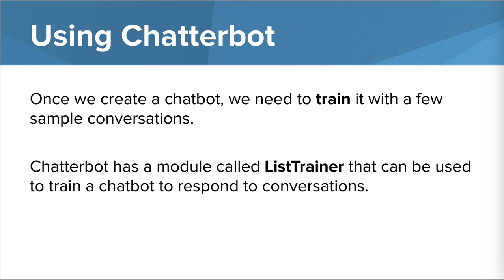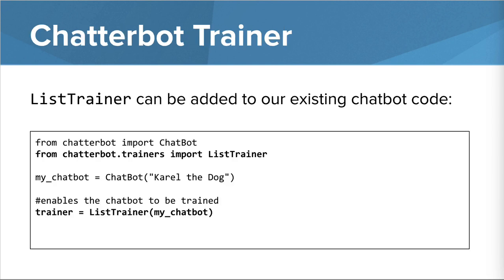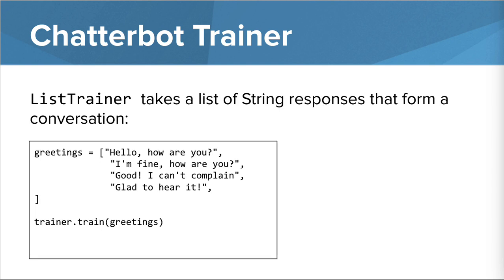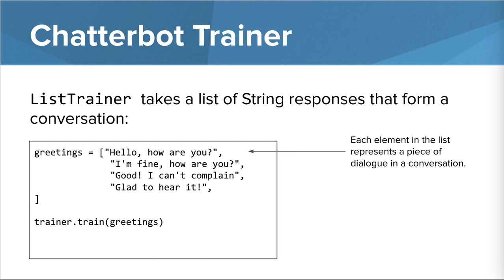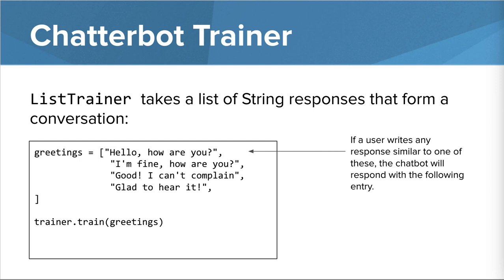Once we've created the chatbot, we need to train it with a few sample conversations. ChatterBot has a module called ListTrainer that we can use to train a chatbot to respond to conversations. To add a ListTrainer module, we write from ChatterBot.trainers, import ListTrainer at the top of our program. Then we create a ListTrainer object, pass our chatbot variable to it, and store it in a variable called Trainer. ListTrainer takes a list of string responses that form a conversation, where each element represents a piece of dialogue.